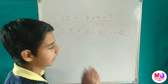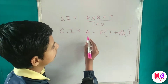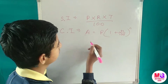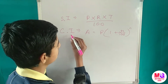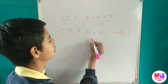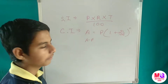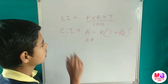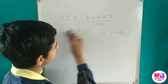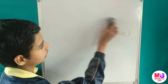After getting the amount, to find the compound interest we use: Compound Interest equals Amount minus Principal. So A minus P gives us our compound interest. These are the formulas of compound interest.